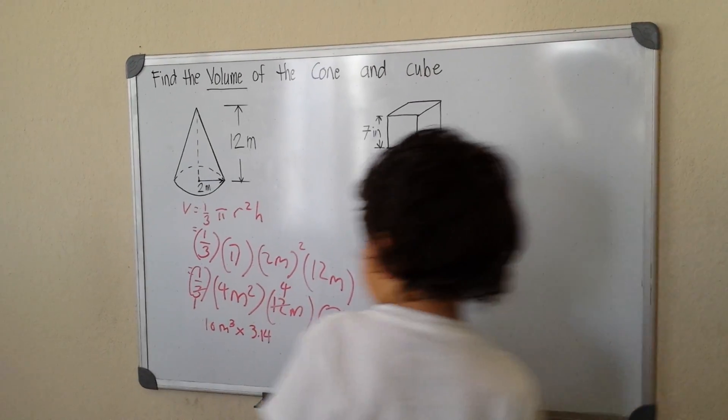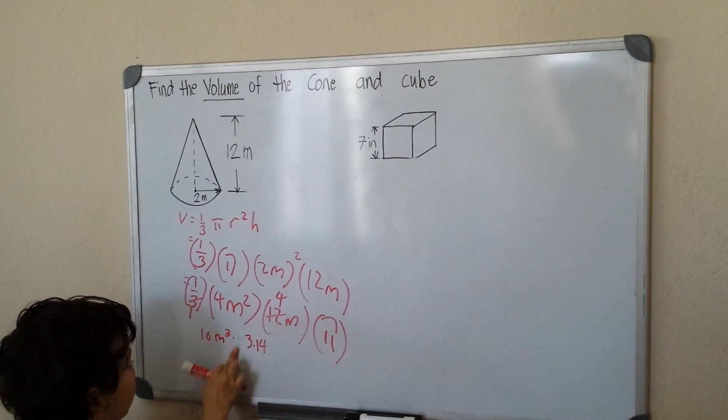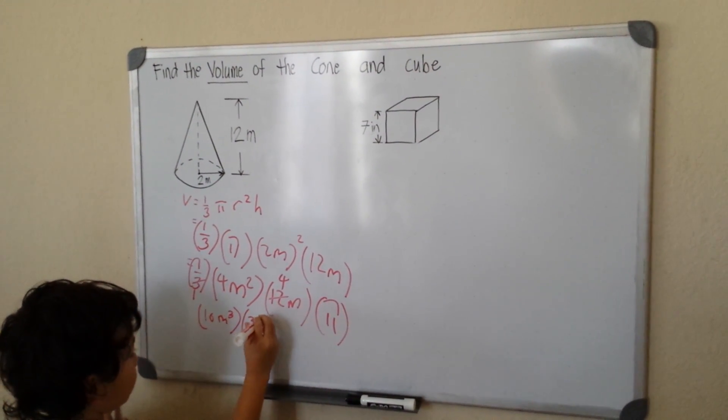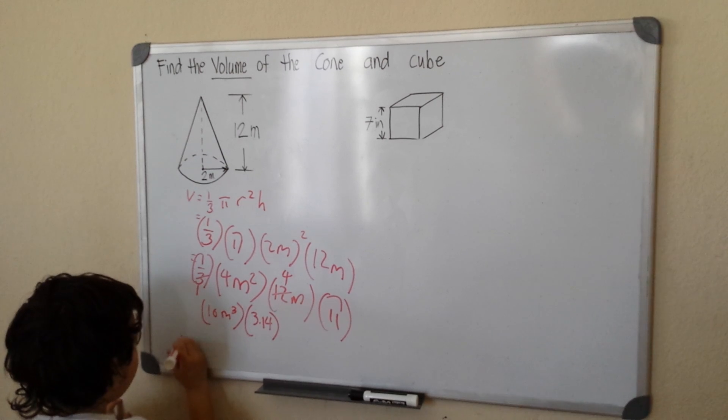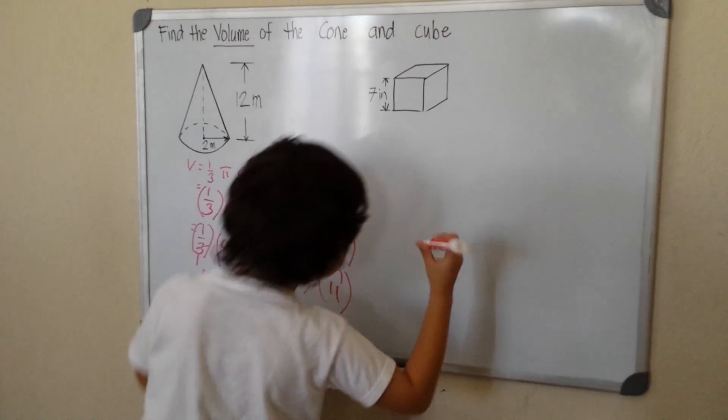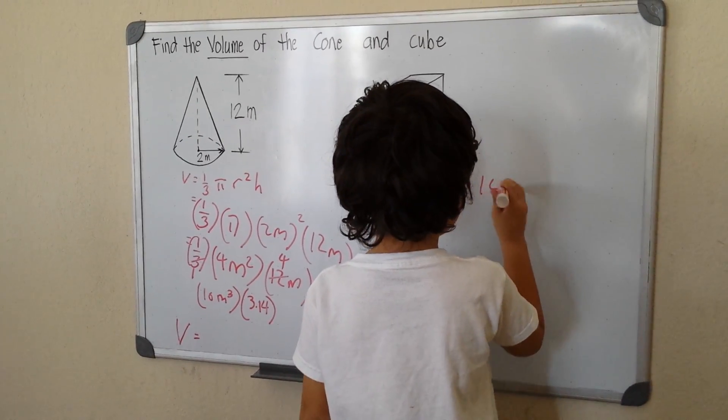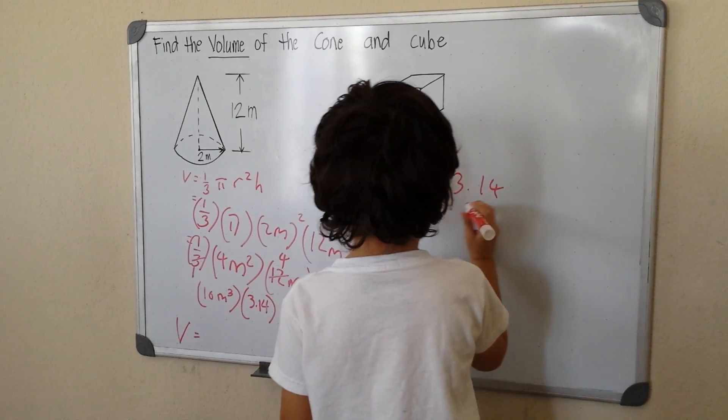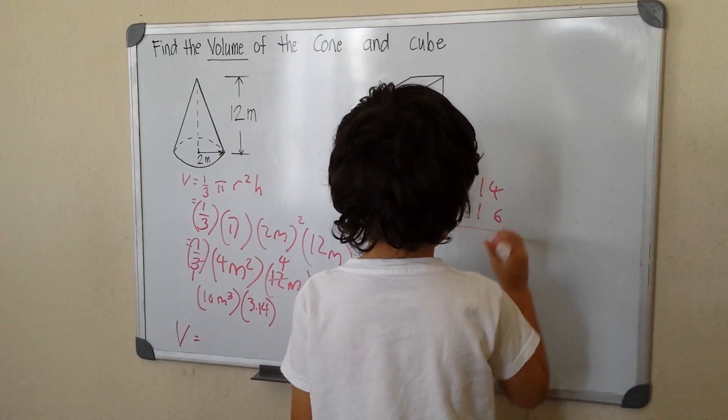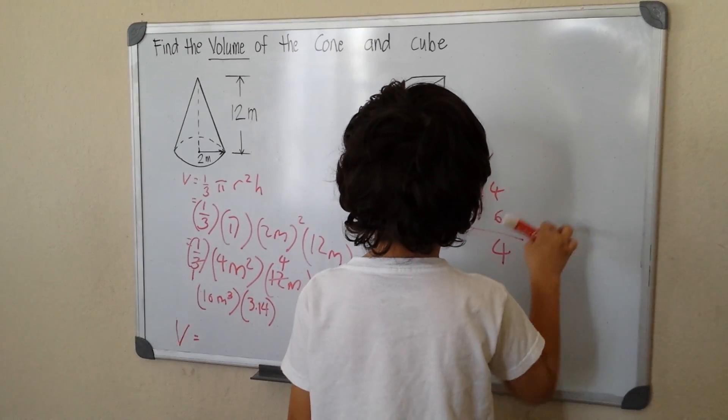Put it in the bracket. So my volume is equal to 3.14 times the 16. 6 times 4, that will be 24, carry 2.